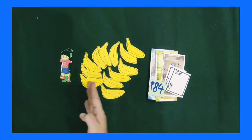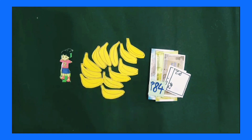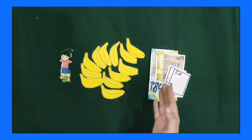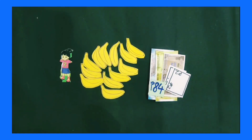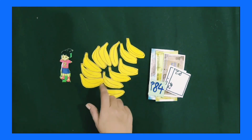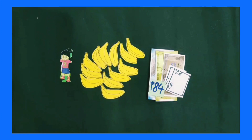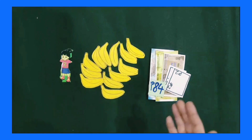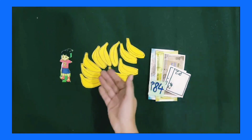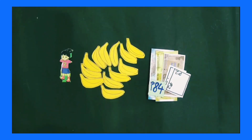One day Raman bought a dozen bananas and the cost of a dozen bananas is rupees 84. Do you know how many bananas are in one dozen? Yes, 12 bananas. The cost of 12 bananas is rupees 84, but we have to find out the cost of one banana. To find the cost of one banana, we divide rupees 84 into 12 equal parts.